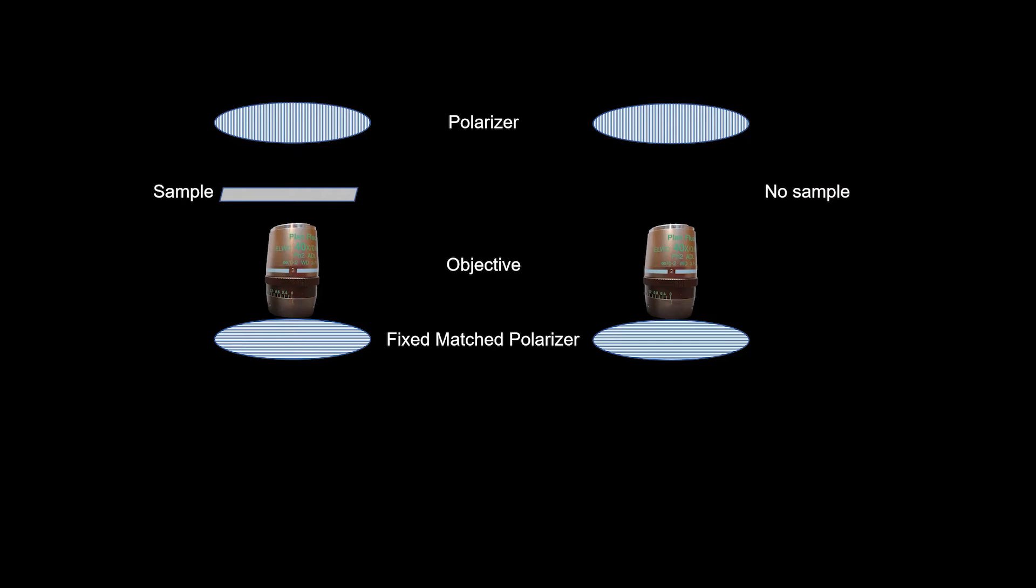If you don't have a sample in the pathway and you put both polarizers in, you should not have any light coming through. It should look dark.